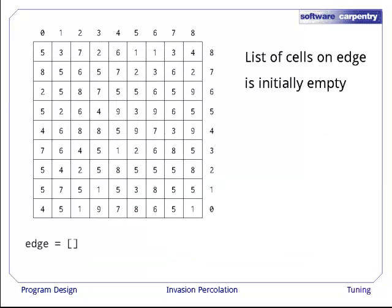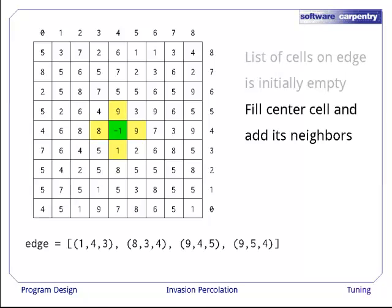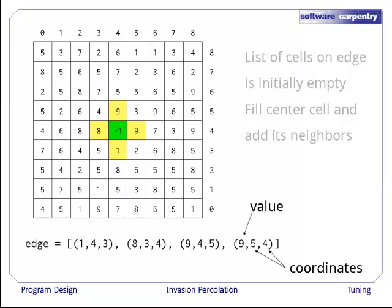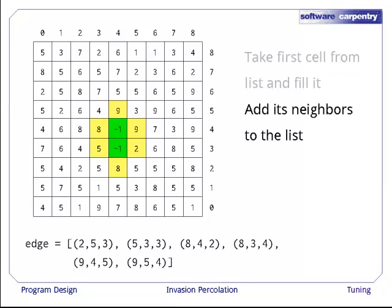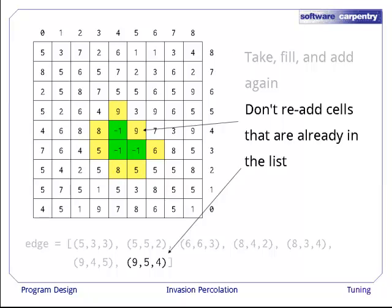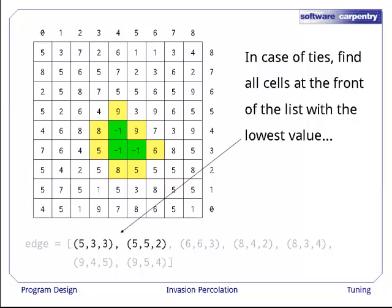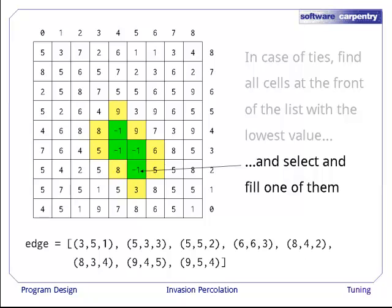An example will make this clearer. The list of cells on the edge is initially empty because we haven't filled anything in the grid. When we fill the center cell, we add its neighbors to the list. When we add a neighbor, we add the value as well as the coordinates. We then take the next cell from the front of the list, fill it, and add its neighbors again. Now notice that we're always keeping the list sorted by increasing value. That way, the candidates for filling are always at the front of the list. And of course, if a cell is already in the list, we never add it a second time. And in case of ties, we find all the cells at the front of the list with the lowest value, and pick one of those at random to fill.